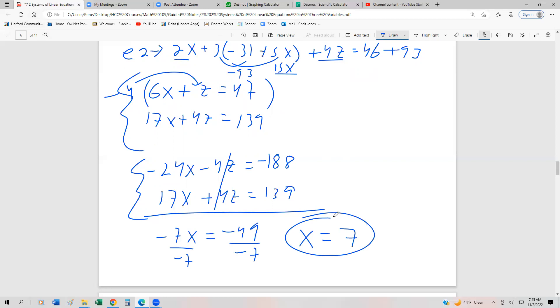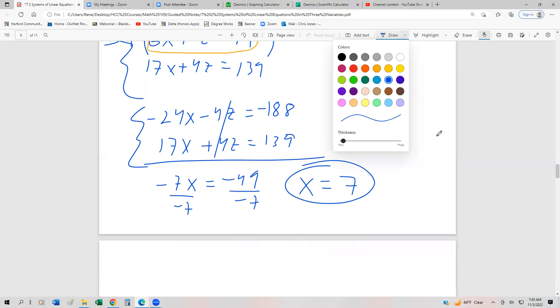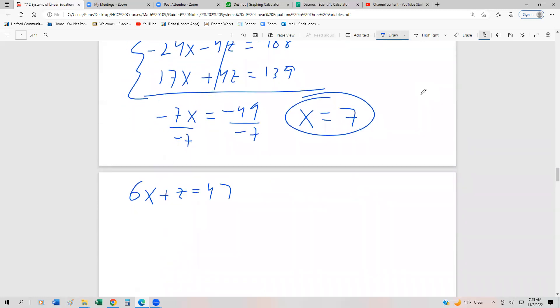Now what I'm going to do is substitute all the way back, maybe somewhere like up here, because z is already isolated. You only have a singular z, so it just makes it easier. Always make it easy for yourself. So we have 6x plus z equals 47. Or 6 times 7 plus z is 47. This is 42. So we're going to subtract 42 from both sides. And that means z is going to be equal to 5.